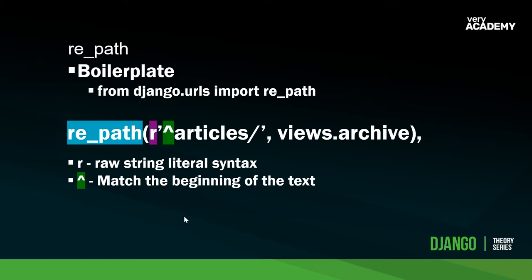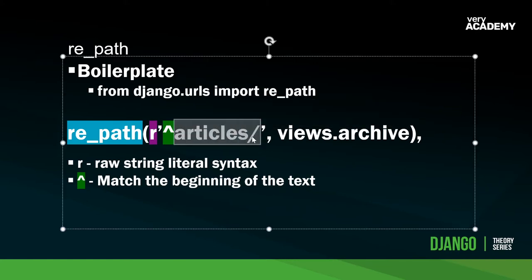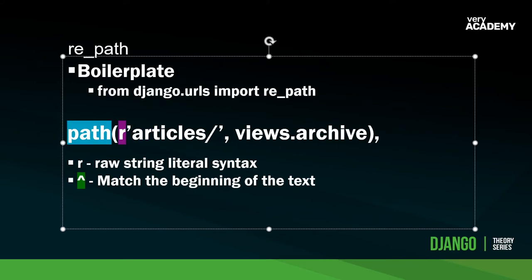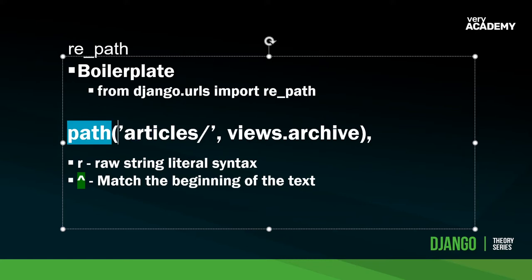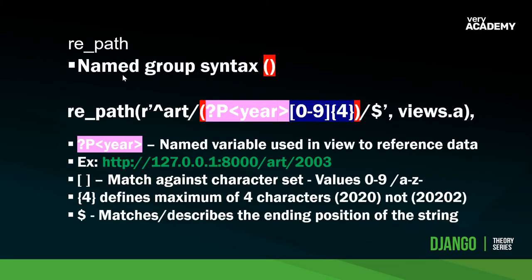The caret `^` basically just matches the beginning of the text, saying that our URL we pass into the browser must start with 'articles'. If I wanted to translate this into a normal path, I'd just remove the extra characters. Now we have an additional unit: we have `r`, the caret, and then a link starting with 'art', so our matching string must start with 'art'. We then have what's called a named group syntax.